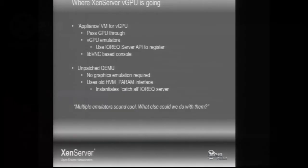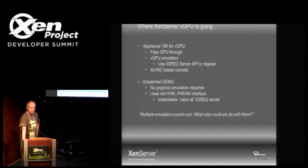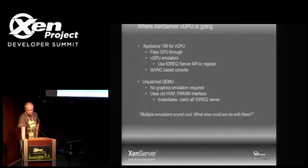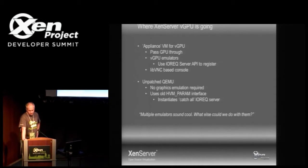The implementation is still in domain zero, which is obviously a bit concerning from a security point of view. Given that we don't have access to the source, we can't really audit it — all we can do is get security statements from NVIDIA. So in future I'd like to try to isolate it. Given that we now have a separate emulator that doesn't have to be in DomZero, we would go with a disaggregated solution: create an appliance domain for VGPU, pass through the physical GPUs to that domain, run the emulator in that domain, which would then service the actual guest VMs.